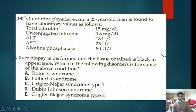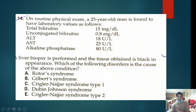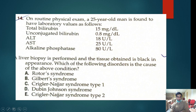Let us review what was taught last class with a case. On routine physical examination, a 25-year-old man is found to have total bilirubin of 50, which is raised. Unconjugated bilirubin is normal at 0.8. SGOT, SGPT is normal and alkaline phosphatase is also normal. Liver biopsy tissue is black in appearance — which disorder is the cause?